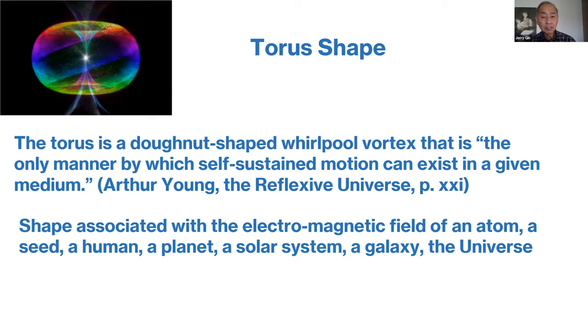You find the torus shape in virtually everything: the electromagnetic fields of an atom, a seed, a human, the planet, solar system, galaxy, and the universe. It's a universal structure.